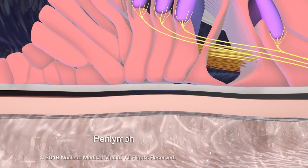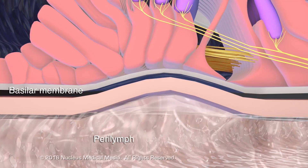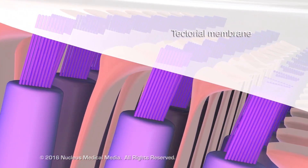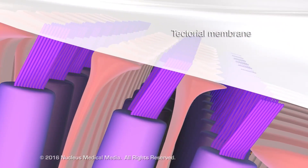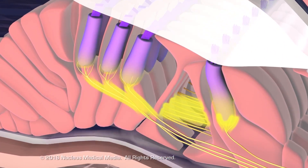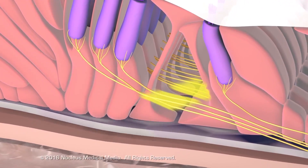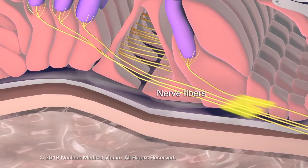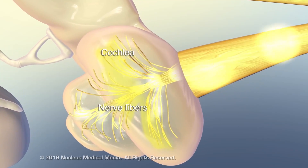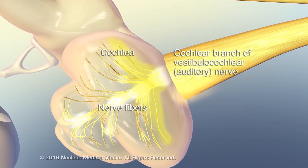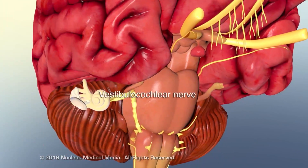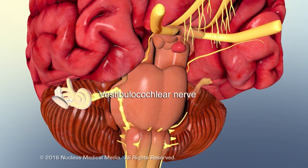Fluid pressure in the perilymph pushes on the basilar membrane and its attached hair cells, which bend when pushed against the stationary tectorial membrane. This event sets off a chain reaction within the hair cells, converting the pressure wave to a nerve impulse in the nerve fibers. Nerve fibers throughout the cochlea combine to form the cochlear branch of the vestibulocochlear, or auditory, nerve, which transmits the sound nerve impulse to the brain.